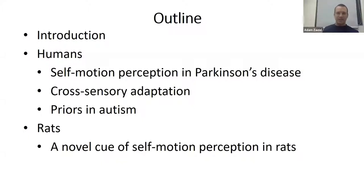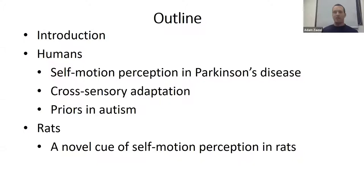The human work spans a few different domains. I will talk about self-motion perception in Parkinson's disease, cross-sensory adaptation studies in normal healthy individuals, as well as some work on autism. Then I will give some rat results where we've discovered a novel and interesting view of self-motion perception in rats.